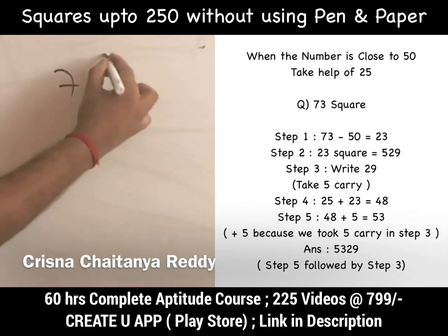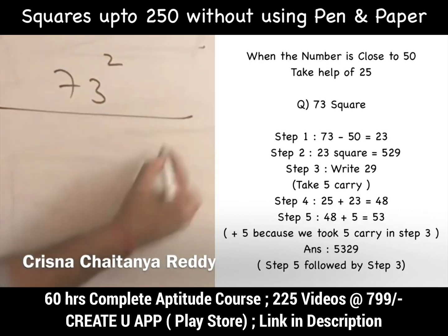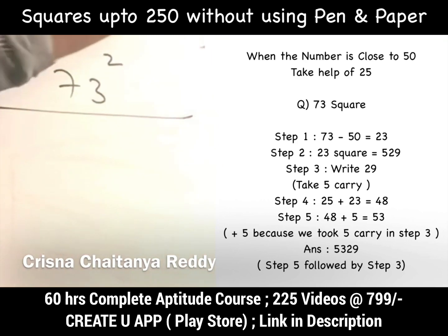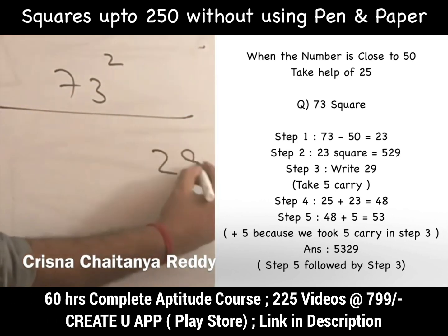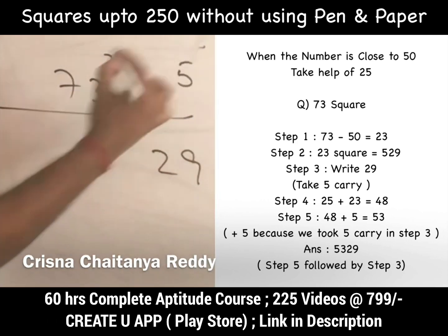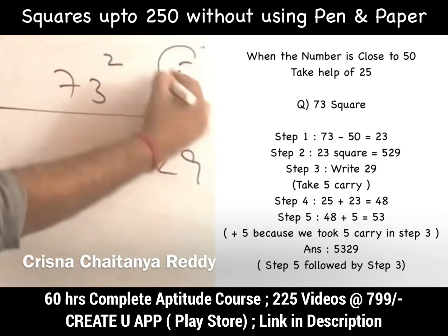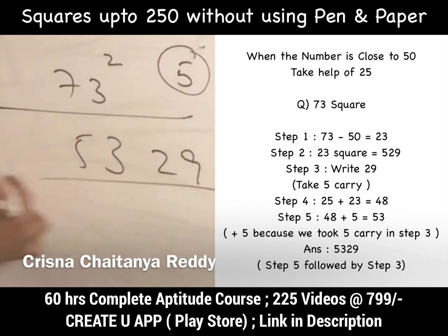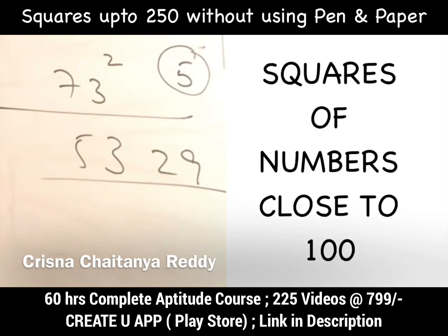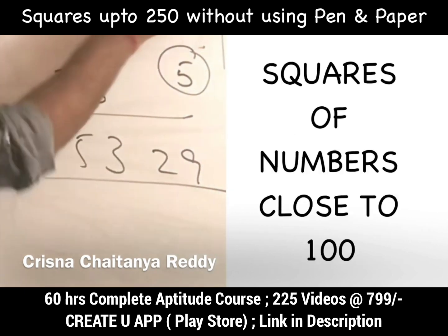For 73²: it is still close to 50 — 23 more than 50. 23² = 529; write 29 with carry 5. Since it is more than 50, add to 25: 25 + 23 = 48, plus 5 carry = 53. Answer is 5329. This is the method for numbers close to 50.